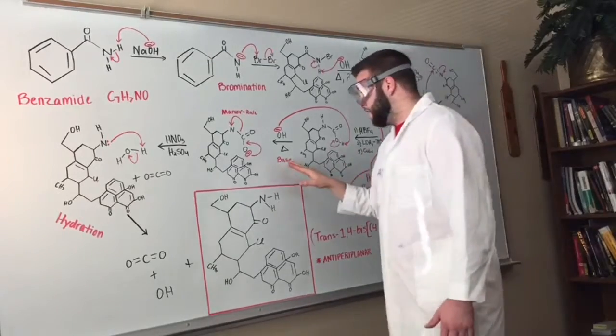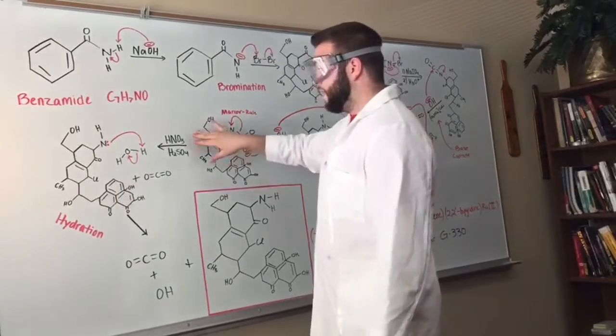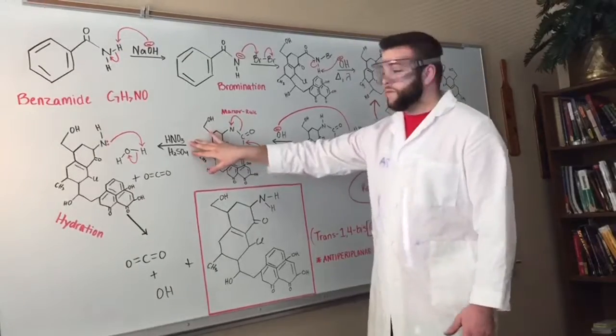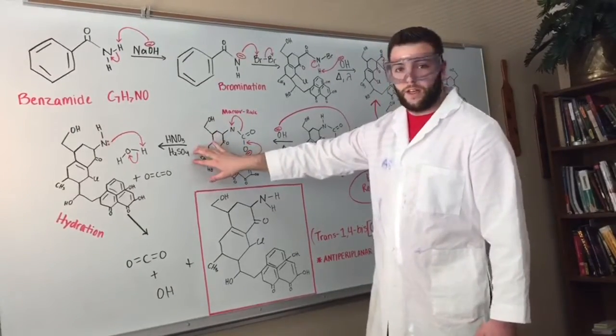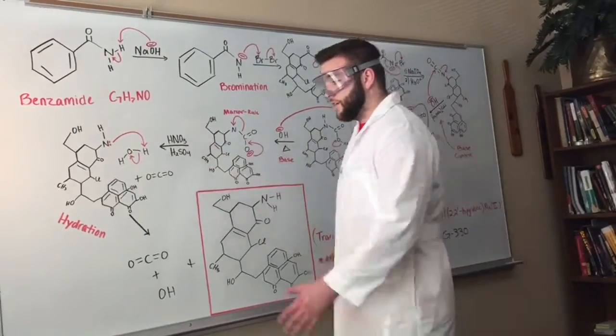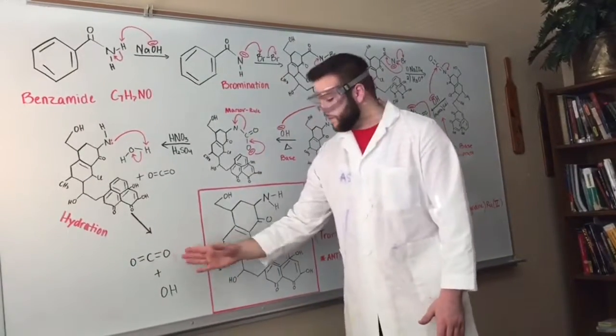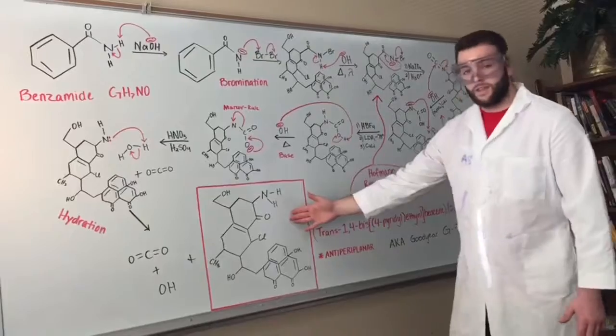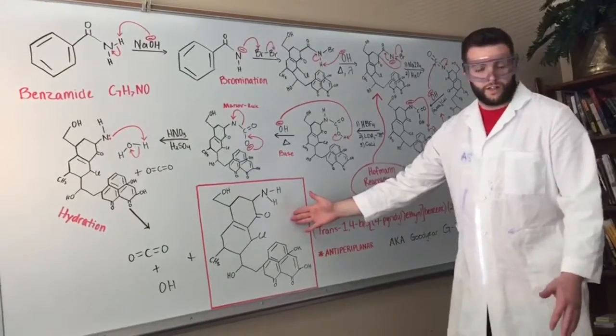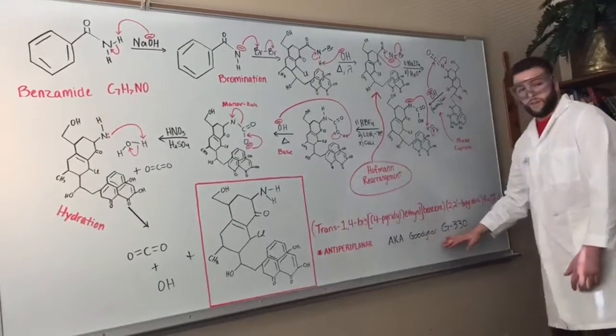After the cupric base and another base, you add HNO3 and H2SO4, which are extremely acidic compounds. It goes through hydration, which gives you your final product of CO2 base and this compound, which I like to call the Goodyear G330.